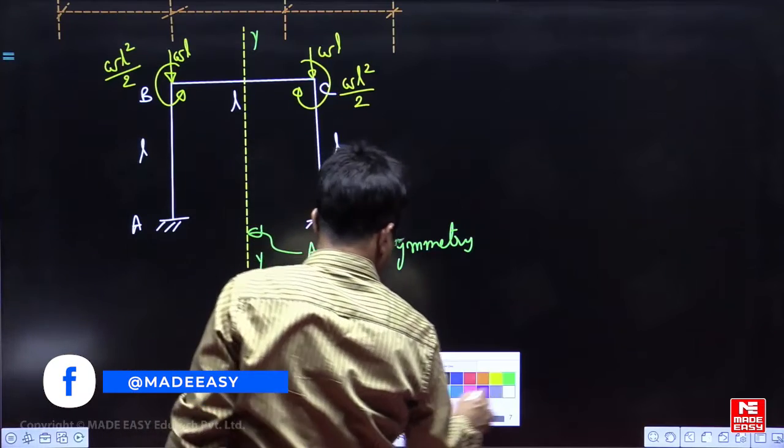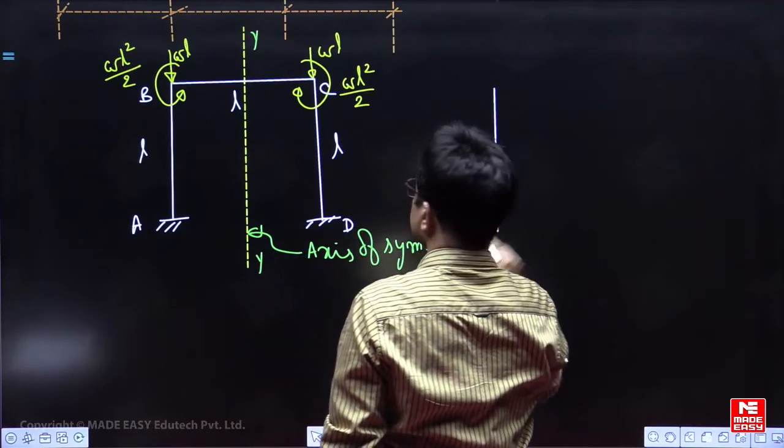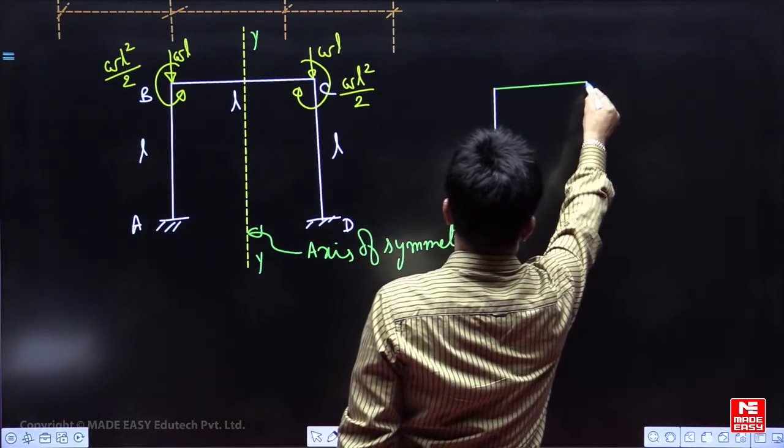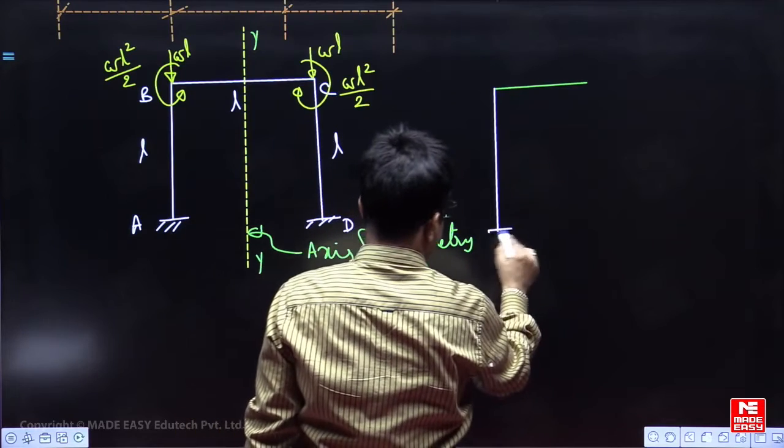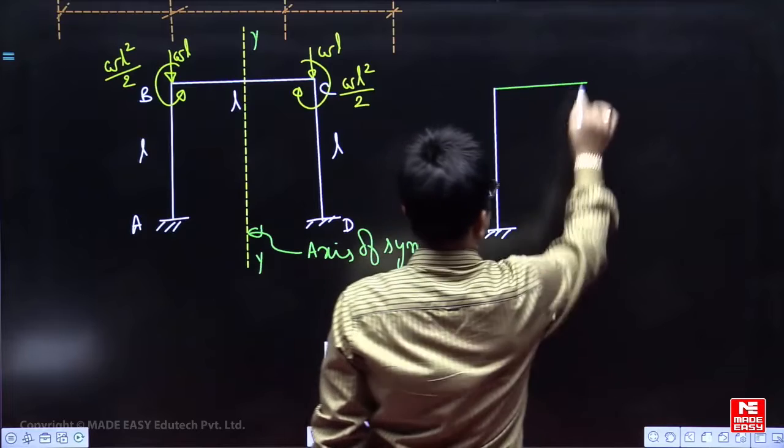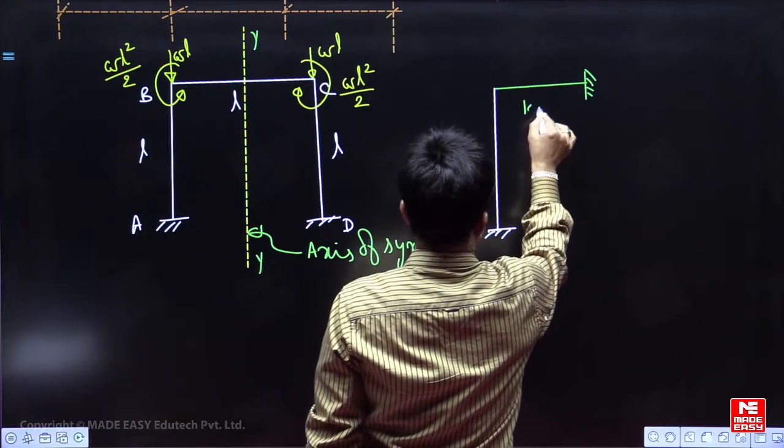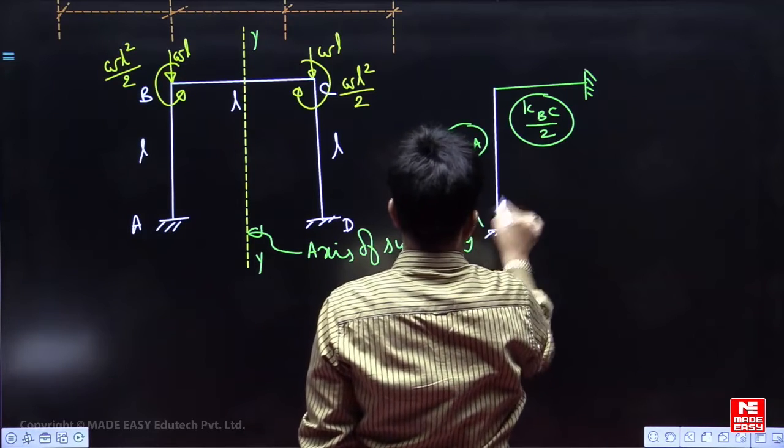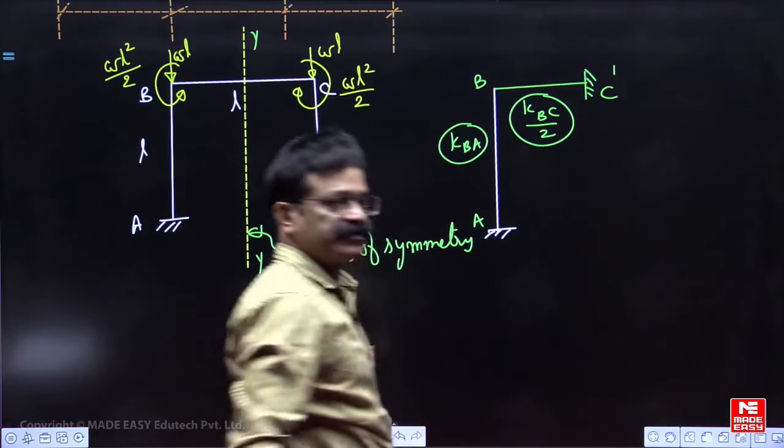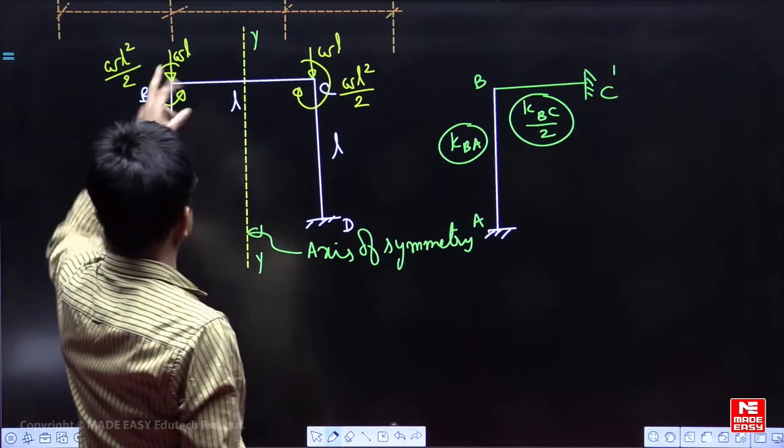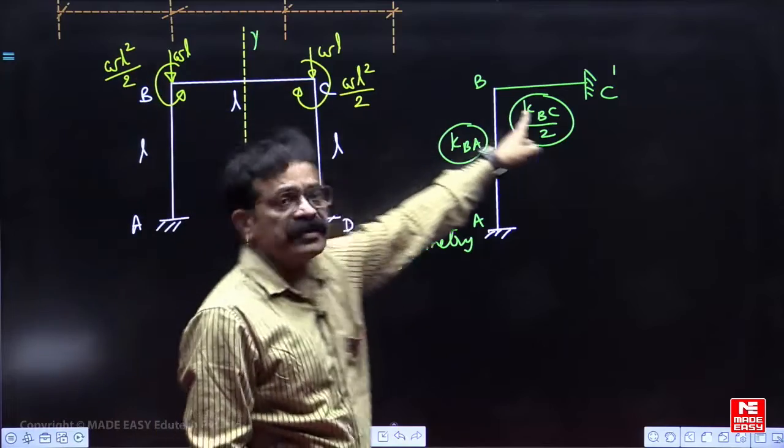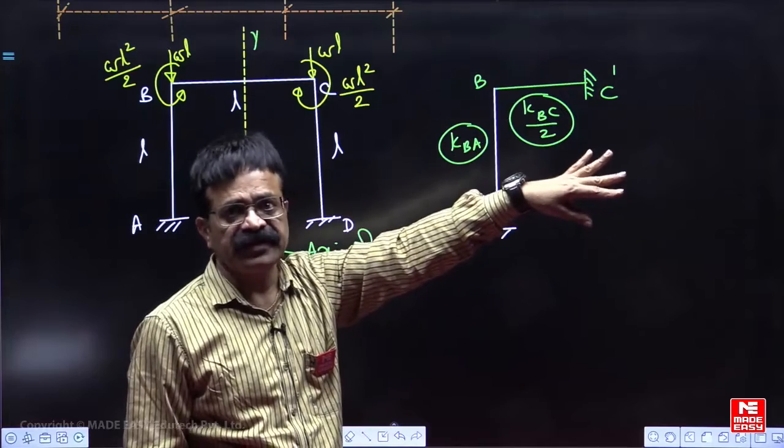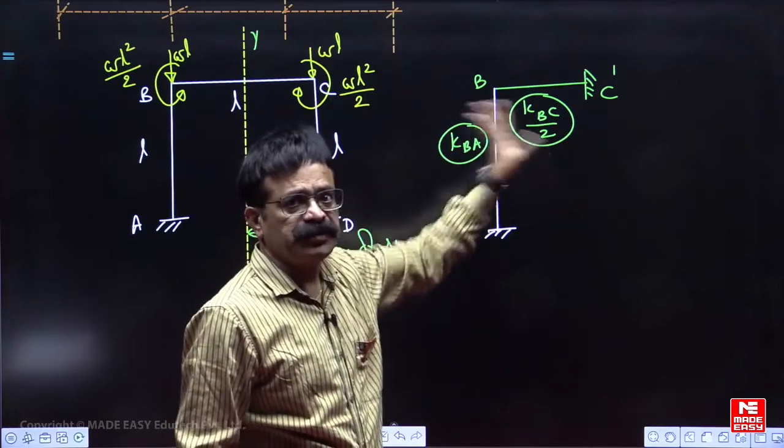What we do is take this A, B member as it is, then B, C member we replace it with another independent member like this. This already fixed. This is again an imaginary fixed support. This stiffness is K BC by 2, this is K BA. This point let us say A, B, it takes a C dash. Whatever movements are there, original movements as this will keep it. We distribute these movements on this imaginary frame. Whatever movements you get with opposite sign, we will write on the other half. Here is asking moment at A directly, on this we distribute the movements.